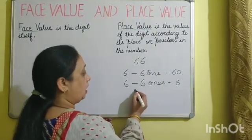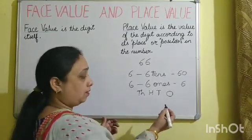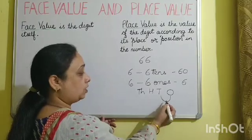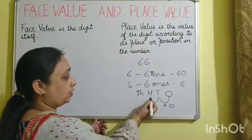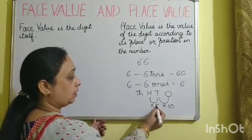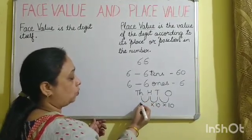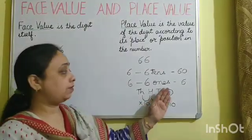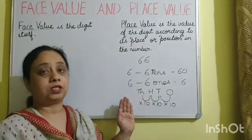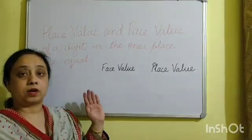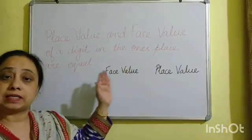We have the place values: thousands, hundreds, tens, and ones. When we move from ones to tens, the digit gets multiplied by 10. When we move from tens to hundreds, again the digit gets multiplied by 10. As we move towards the left, the digit is multiplied by 10 and the place value is increasing. Another important point: the place value and face value of the digit in the ones place are equal.